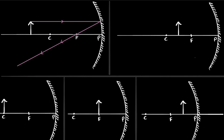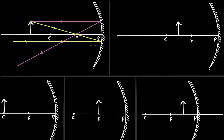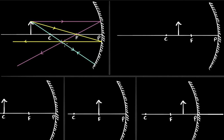The second ray I can draw through the focus, and then this ray will become parallel to the principal axis — it's exactly opposite to the first one. The third ray I can draw through the center of curvature. This ray will just reflect back in the same direction, because the incident ray is along the normal. Remember, the normal always passes through the center of curvature.